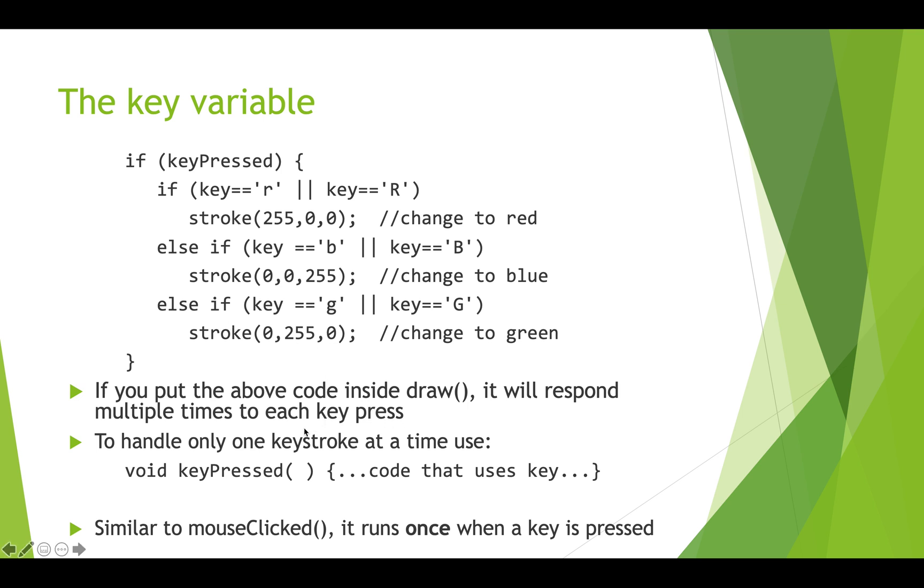One way to handle this instead so that you're not repeatedly doing this stuff is to use the void keyPressed function. This is similar to the mouseClicked function and this will only be called once and then you can put the same code inside of there to check which key was pressed and do something appropriate. So that's everything for characters and chars and using the key variable in processing. Thanks for watching.